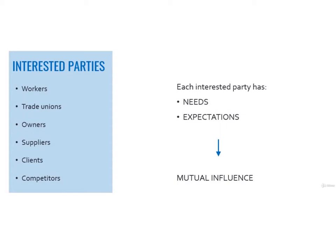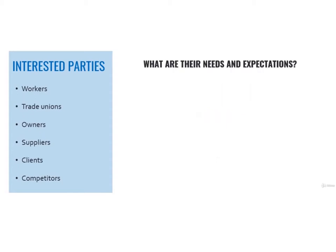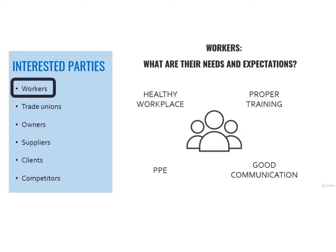In other words, we could ask ourselves not only what they can get from my company, but also what they could give us. Let's get into more details and ask ourselves, for each of them, what are their needs and expectations? Workers — what are their needs and expectations? This is intuitive. They are the most critical interested party. Even the most efficient company may have severe accidents if even just one worker decides to ignore the OHS procedures.